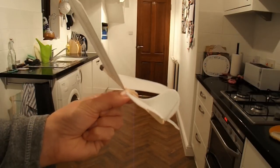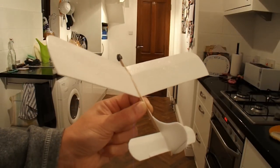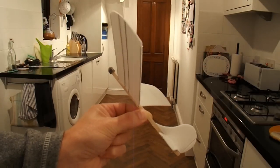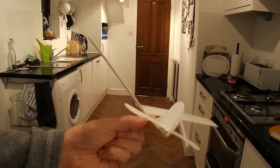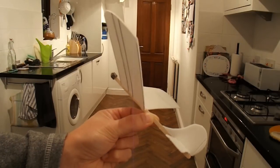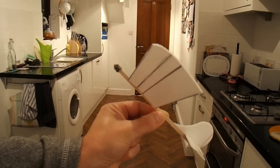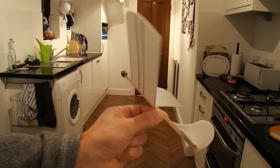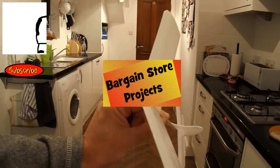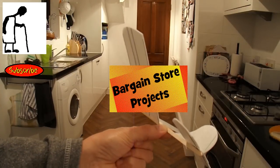Bargain store project number 34 is a polystyrene plate converted into a model aeroplane. Whether I go as far as putting a propeller on the front and making a rubber driven one, I'll have to think because it's a matter of making a decent propeller to make it work.